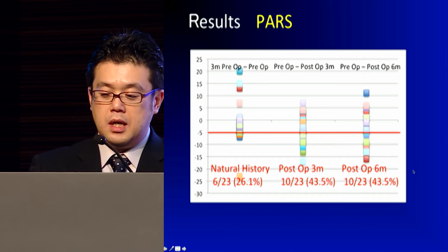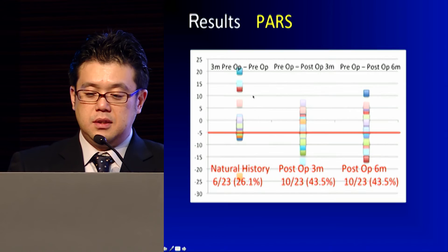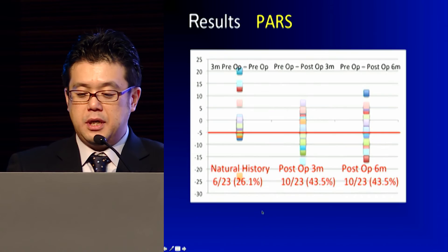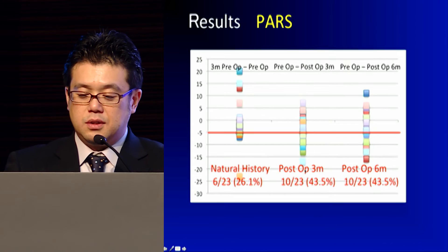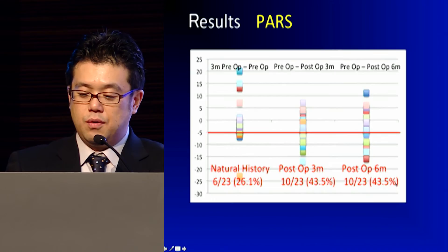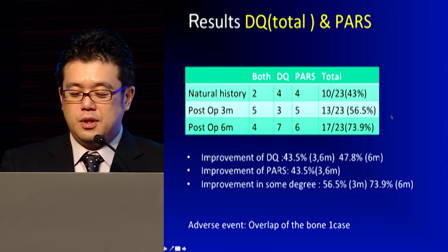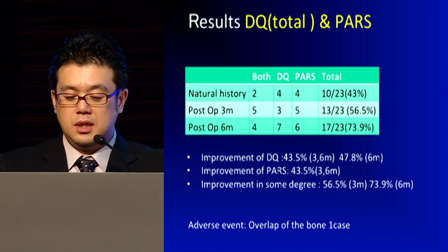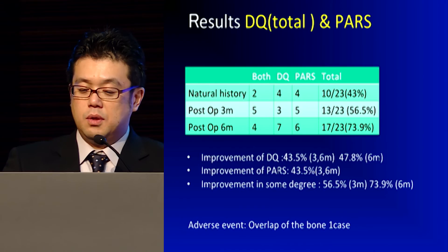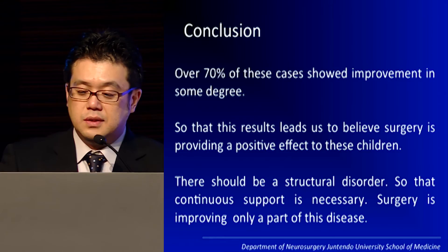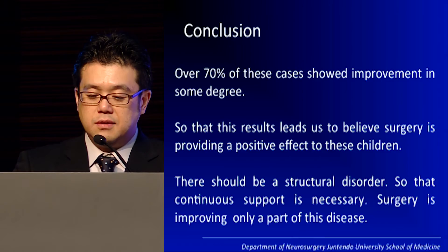Looking at the PARS score system for autism — a decrease in score means improvement. One fourth of patients improved before surgery. On the other hand, we saw an increase of 43% at both three months and six months post-op, and more than 70% of patients showed some kind of increase in these scores. We must report one adverse event: overlap of the bone in one case. Overall, more than 70% of cases showed improvement in some degree, leading us to believe surgery is providing a positive effect for these children.